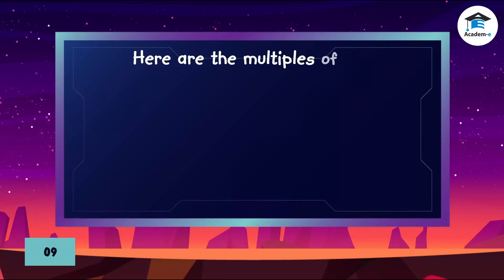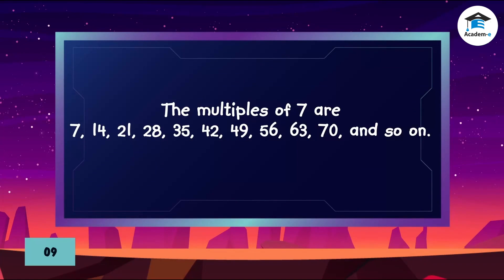Here are the multiples of the following numbers. The multiples of 7 are 7, 14, 21, 28, 35, 42, 49, 56, 63, 70, and so on.